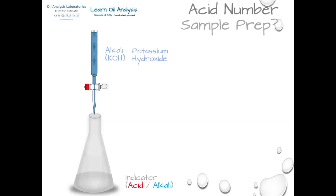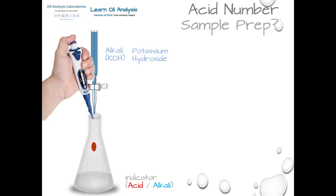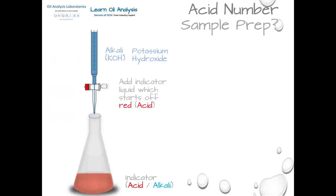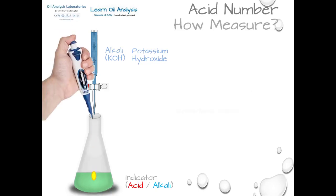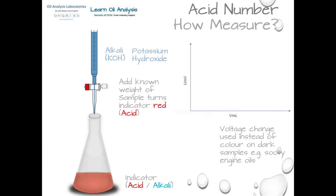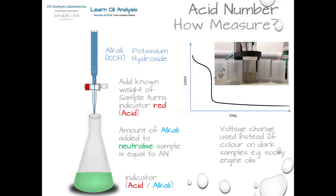An acid number is measured in milligrams of KOH per gram — that is, how much alkali is needed to neutralize the acid. In colorimetric titrations, a colour change is used similar to litmus paper. The indicator is red/green: we titrate a small amount of KOH to bring the indicator to the neutral green stage, add a known weight of the acidic sample which turns it red, then add additional alkali until it returns to green. We now know how much alkali was needed to neutralize the known weight, giving us the acid number in milligrams of KOH per gram.